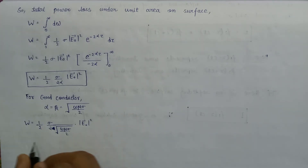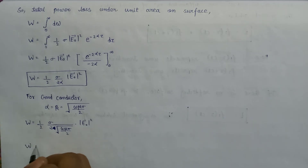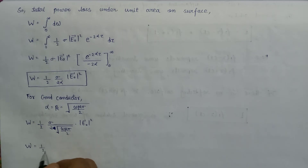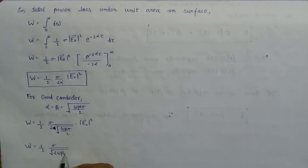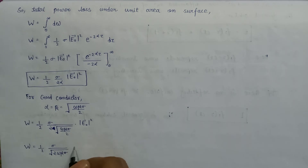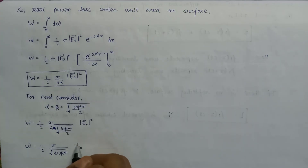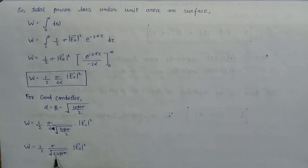We know that the square root of 2 omega mu sigma is nothing but equal to the modulus of gamma, because for a conductor the propagation constant equals the square root of j omega mu sigma, and the modulus of gamma equals the square root of omega mu sigma.